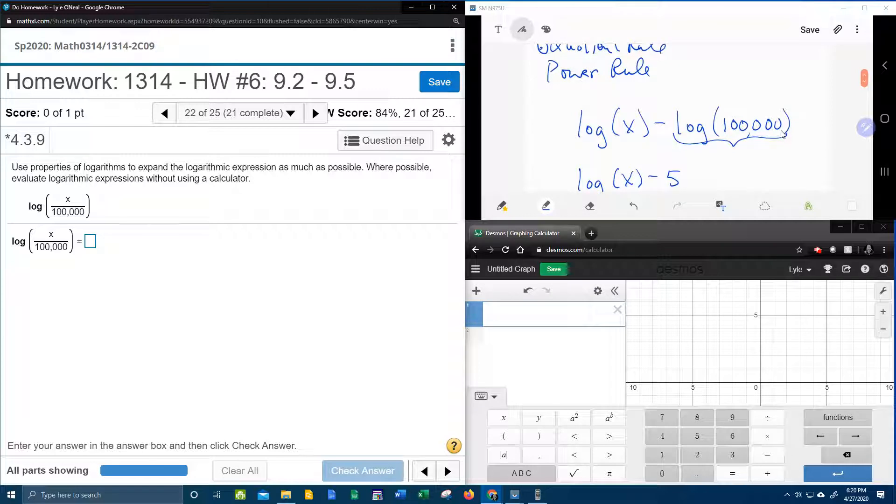Now if you're wondering how would I do that if I didn't have a calculator? Well, we could notice that 100,000 can be rewritten as 10 to the 5th power.